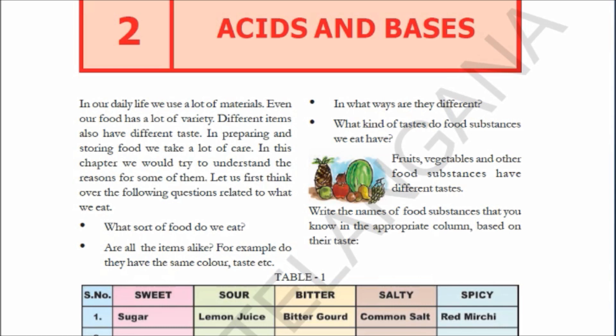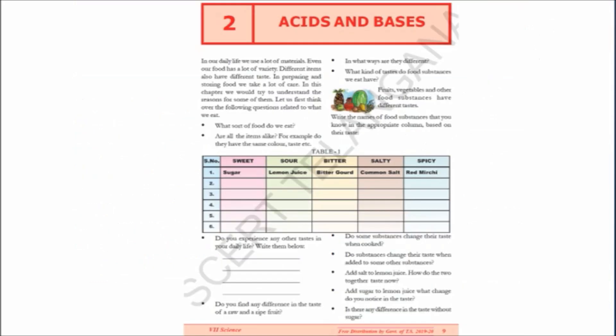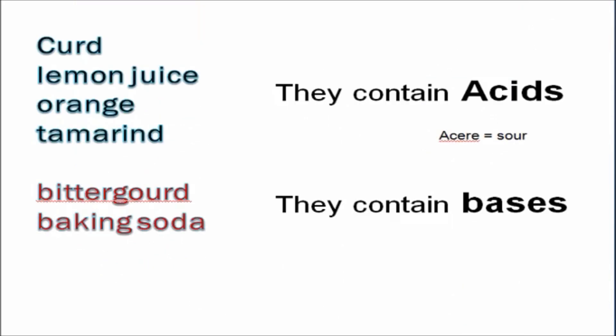Did you ever think why some food items have a sour taste, like orange and lemon? Why does bitter gourd or baking soda give a bitter taste? Why does salt have a salty taste? We are going to learn the answers to these questions. Curd, lemon juice, orange, and tamarind all give us a sour taste.